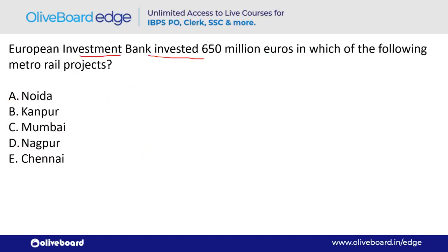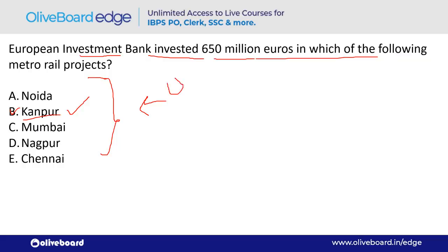European Investment Bank (EIB) invested $650 million in which Metro Rail project? The answer is Kanpur — option D. Kanpur is in Uttar Pradesh. The current Governor of UP is Anandi Ben Patel and the Chief Minister is Yogi Adityanath. EIB's headquarter is in Luxembourg.